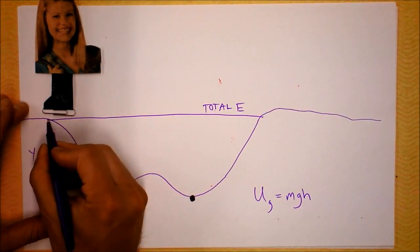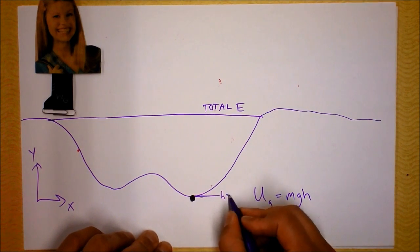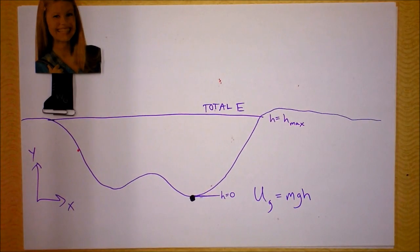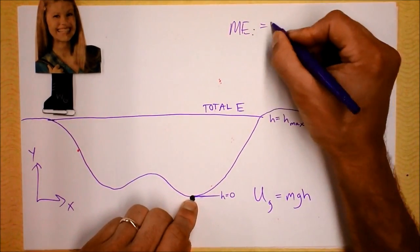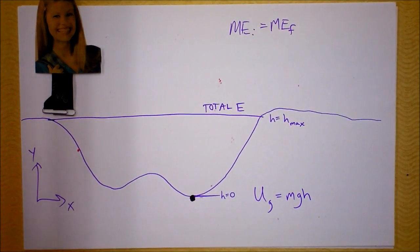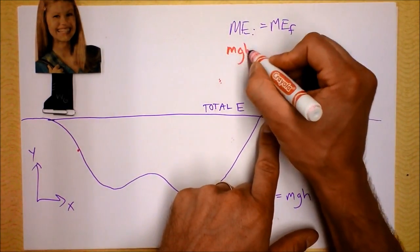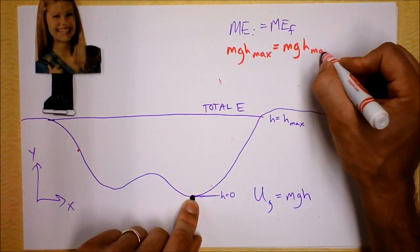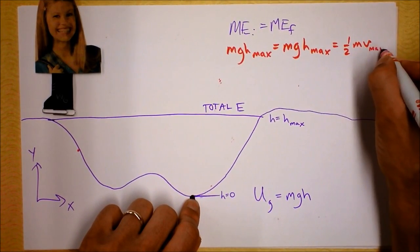When her height is the smallest right here, she is going the fastest — very reasonable. At the top, all of her energy is gravitational potential energy. Let's call that location H equals 0 at the bottom and H equals H-max at the top. At the bottom her potential energy is exactly zero, but we know energy is conserved: initially her energy was MgH-max, so finally her energy here must also be MgH-max.